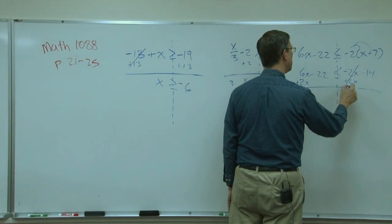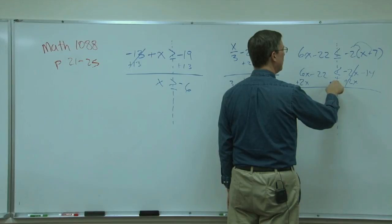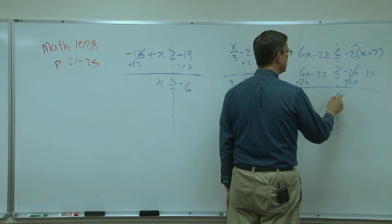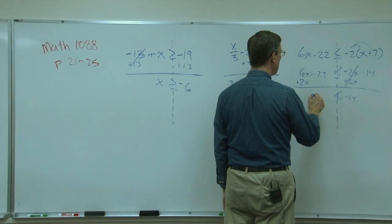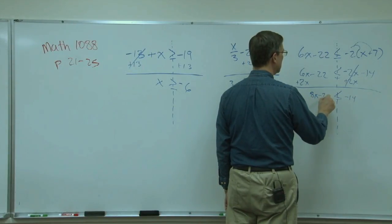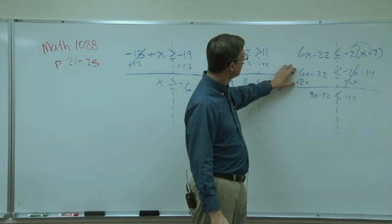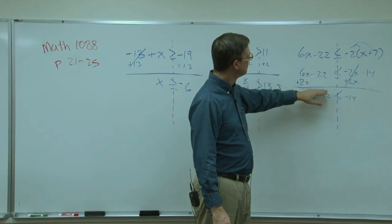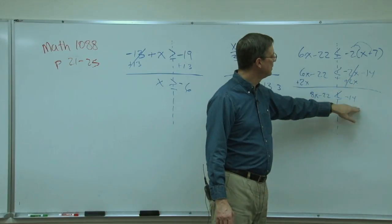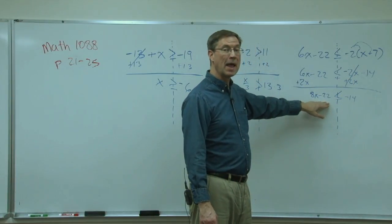This is not a plus, this is a dotted line, so less than or equal to. We'll keep the negative 14 here, and now I have 8x minus 22. Alright, everybody follow that? So 6x plus 2x is 8x. I just brought that down, simplified this.